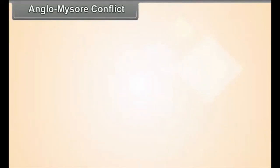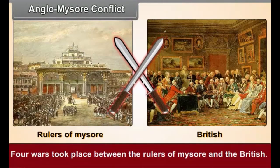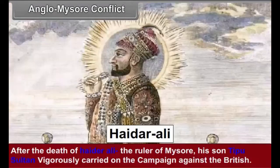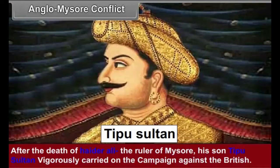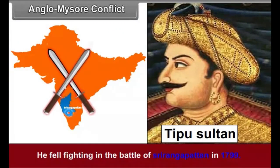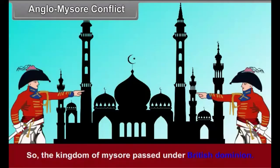Anglo-Mysore Conflict. Four wars took place between the rulers of Mysore and the British. After the death of Haider Ali, the ruler of Mysore, his son Tipu Sultan vigorously carried on the campaign against the British. He fell fighting in the battle of Shriranga Pattanam in 1799. So, the Kingdom of Mysore passed under the British dominion.